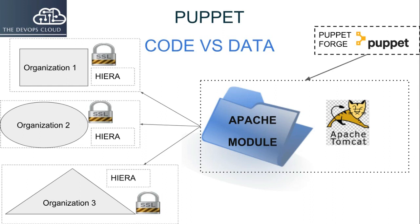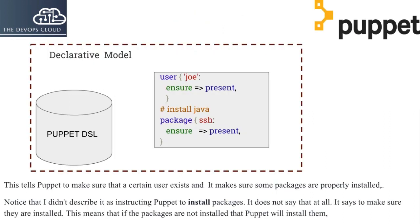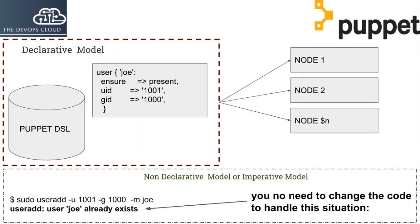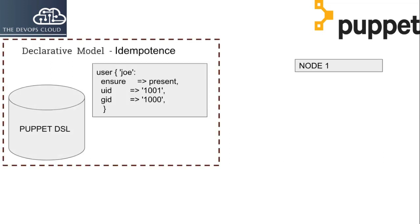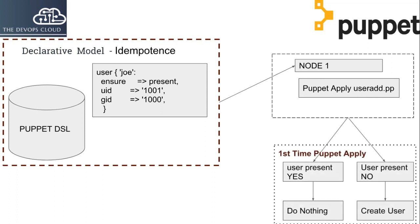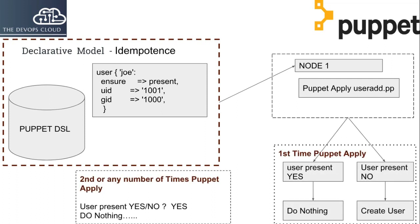We will also cover facts, which will help you create logical conditions inside your manifest. In DSL we will learn the declarative approach and how Puppet helps you achieve the desired state of any resource. We will also learn how idempotence can help you apply classes an unlimited number of times to achieve the same result.